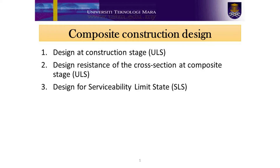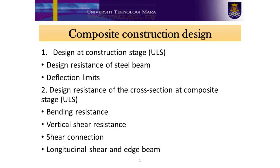At construction stage, the designer must verify the cross-sectional resistance of the steel beam. Once the beam has been set compositely, the design resistance of the cross-section at composite stage must be carried out against bending, vertical shear, shear connection, and longitudinal shear. There are three design conditions that must be taken into consideration: design at construction stage, design of the steel structure during composite action at normal stage, and design of the composite steel structure at serviceability limit state.